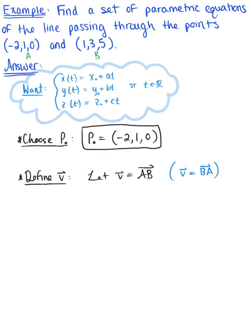Again, you only need one. But I want to emphasize that how you set up your line is going to dictate what the answer looks like. So let's use vector v defined as the vector or the directed line segment from point A to point B. So here we go.